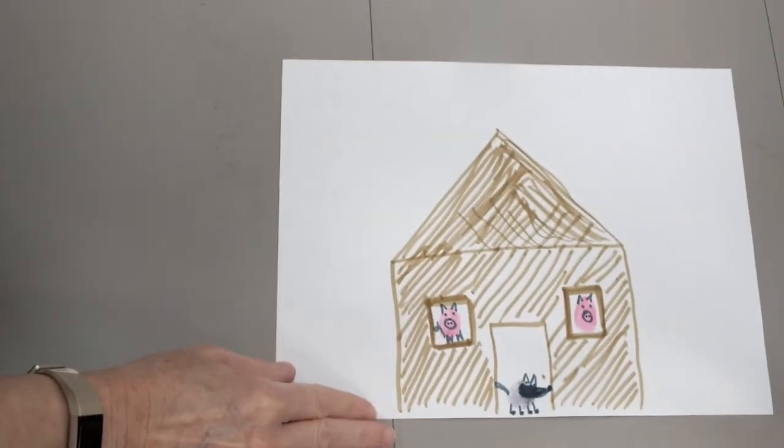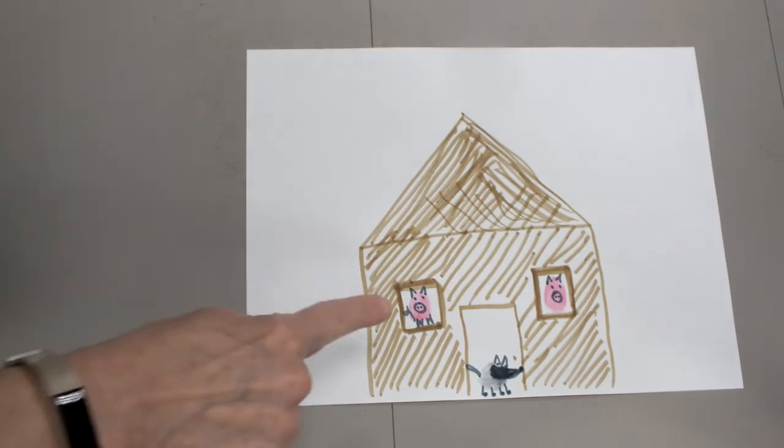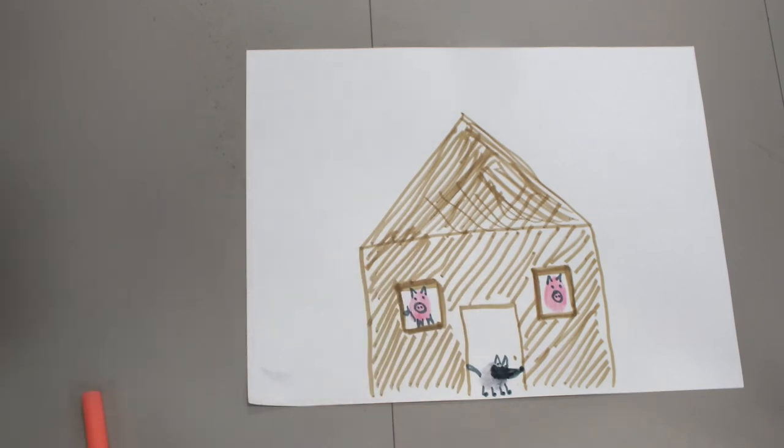So the little pig started running and he soon came to the house of his brother which was made of sticks. That brother had built his house of sticks and he ran as fast as he could and he went and said let me in. The wolf is after me. So the wolf followed that little pig and now there are two little pigs in the wooden house and here is the wolf at their door.